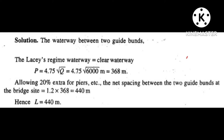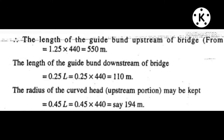The net spacing between the two guidebunds at the bridge site is equal to 1.2 into Q discharge, equal to 450 meters. Hence L is equal to 450 meters. Therefore, length of the guideband upstream of bridge is equal to 550 meters.